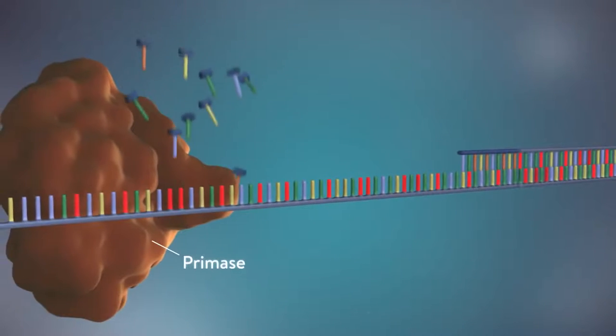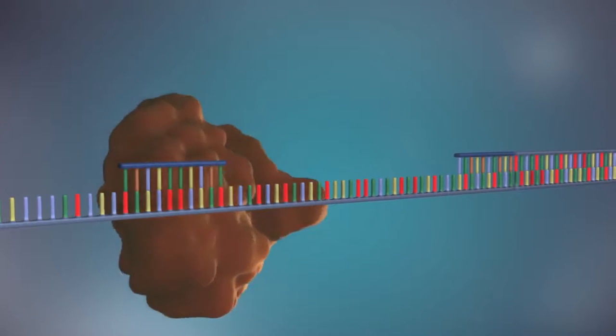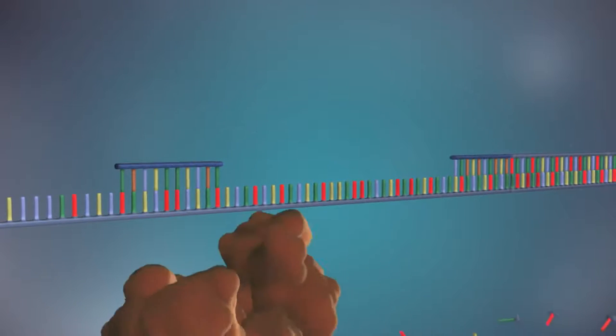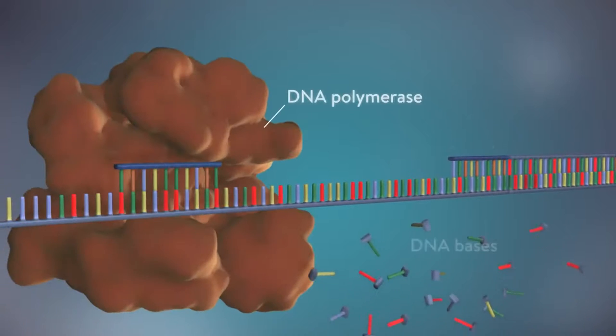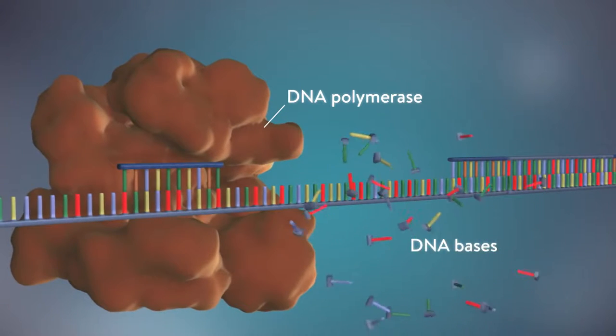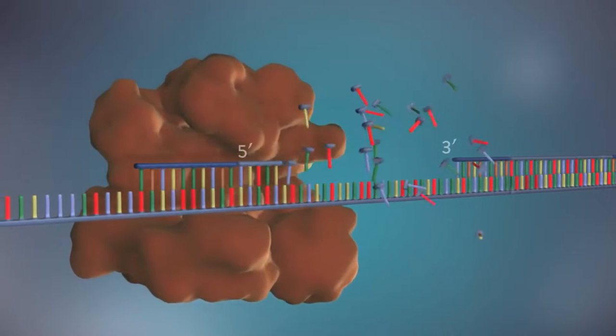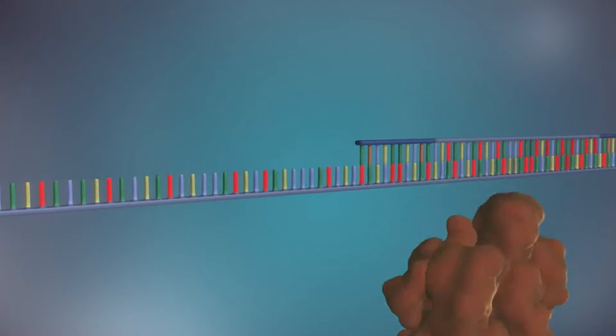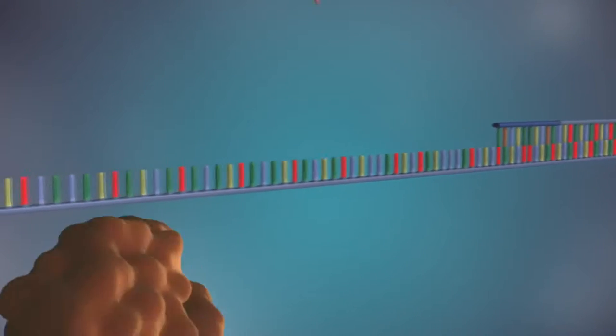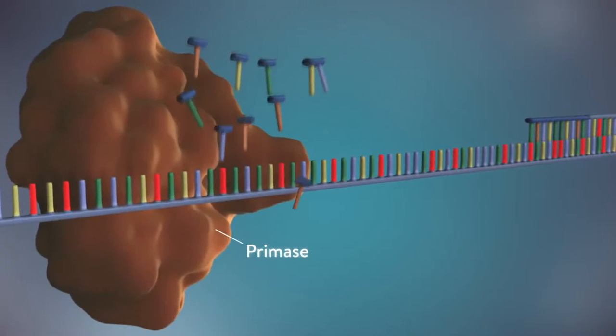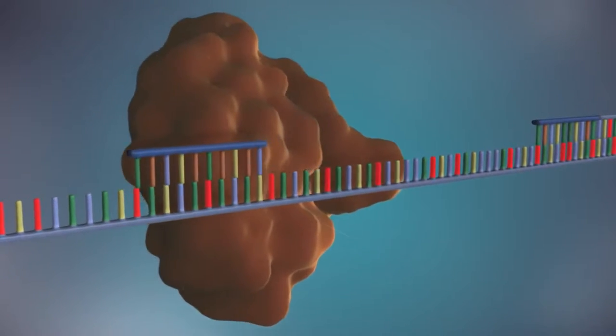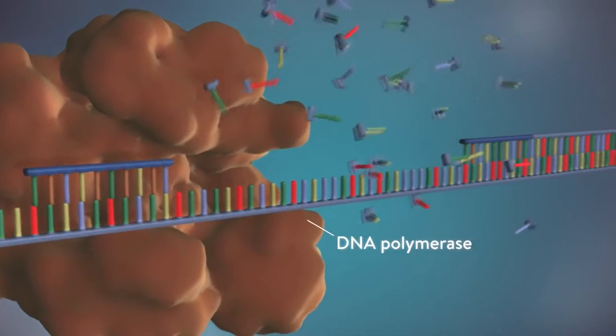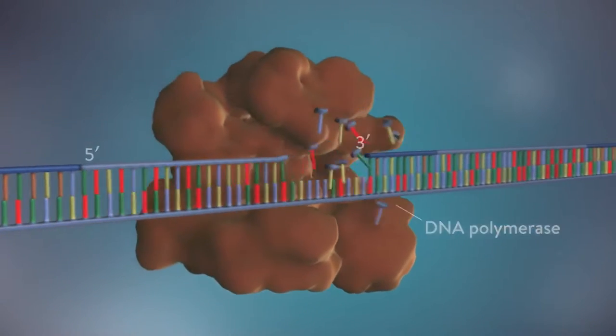Each fragment is started with an RNA primer. DNA polymerase then adds a short row of DNA bases in the five prime to three prime direction. The next primer is then added further down the lagging strand. Another Okazaki fragment is then made and the process is repeated again.